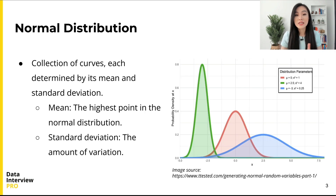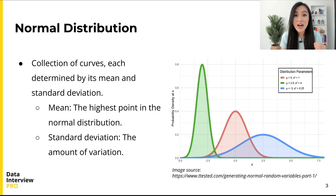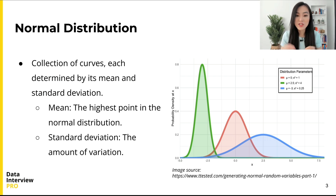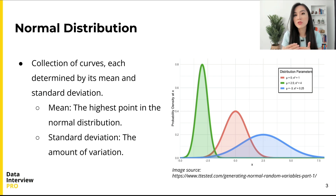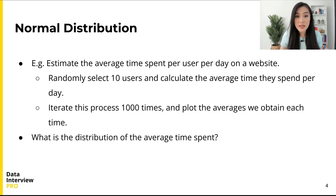Note that the normal distribution is not just one curve — it's a collection of curves, each determined by its mean and standard deviation. The mean is the highest point in the normal distribution, and the standard deviation measures the amount of variability or dispersion of a set of values. This allows us to select the most appropriate distribution from the collection of normally distributed curves. Now let's consider an example.